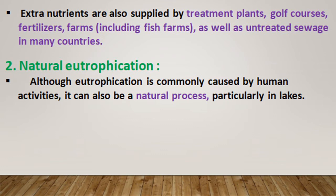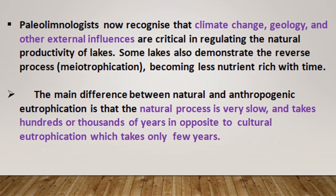The second type is natural eutrophication. Although eutrophication is commonly caused by human activities, it can also be a natural process, particularly in lakes. Paleolimnologists — persons who study lake and river sediments for physical, chemical, and biological information to reconstruct past environmental conditions — recognize that climate change, geology, and other external influences are critical in regulating the natural productivity of lakes. Some lakes also demonstrate the reverse process, called oligotrophication, meaning becoming less nutrient-rich over time.